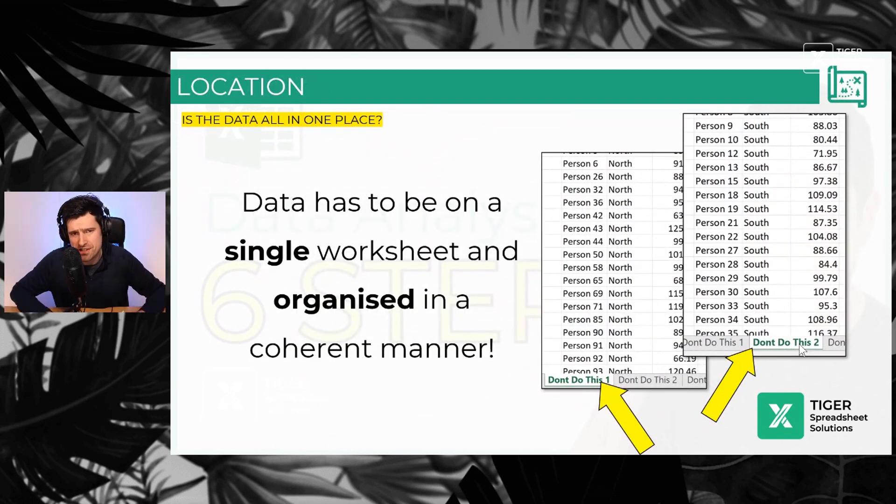Secondly, the location of the data. Again, you're not going to tell me it's fragmented across sheets. This is the cardinal sin in Excel data analysis. But I understand it happens. It's a natural thing to do, isn't it? As data sets get bigger and bigger, we think, right, I'm going to organize it and just separate it out across sheets.